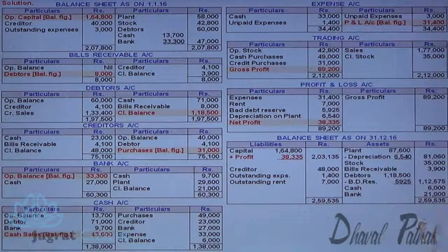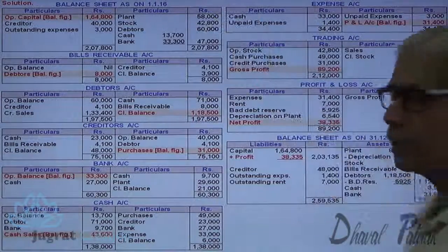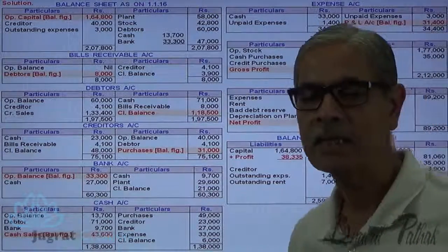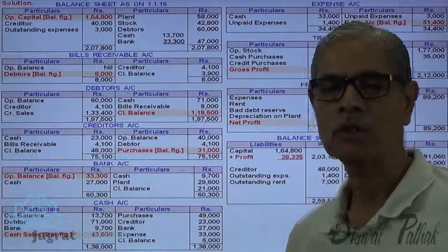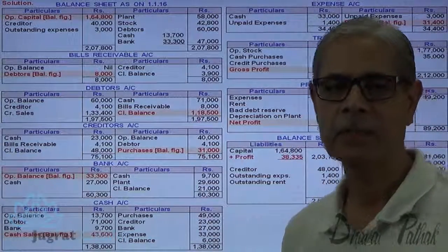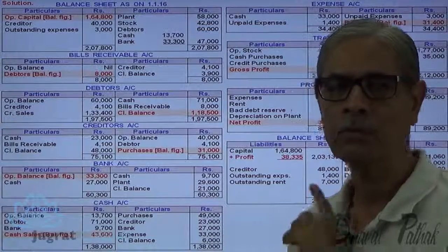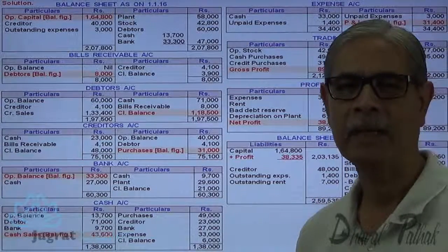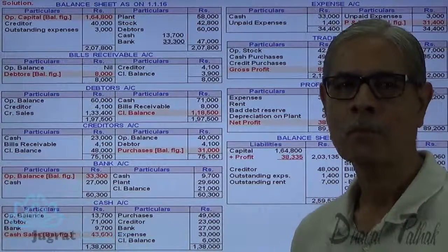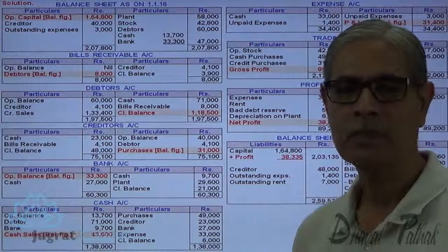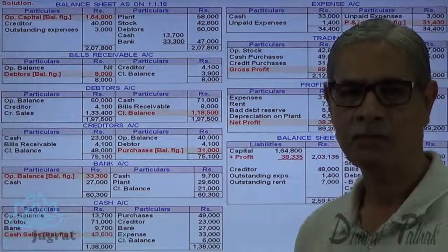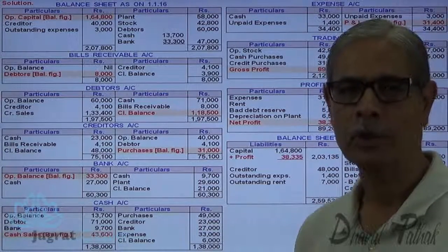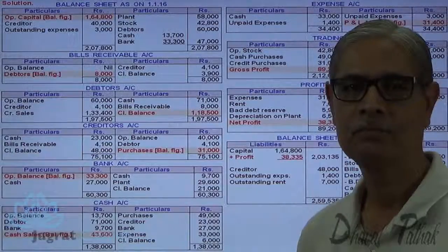The plant account has already been demonstrated. This is how all accounts are prepared, closed, and missing information is found out. The final accounts, as required, are prepared. I have tried to explain this sum and I feel that you have followed all these things. Thanks to all.